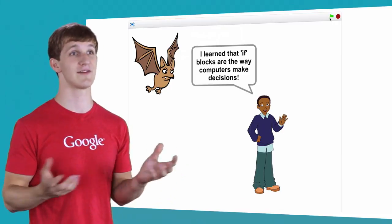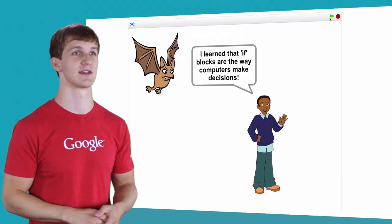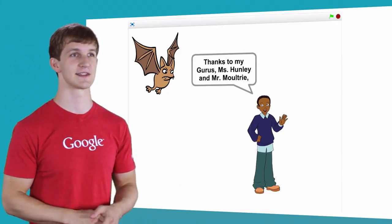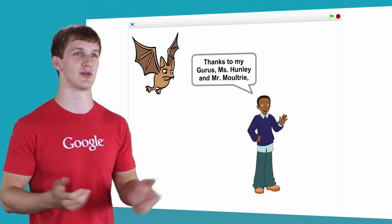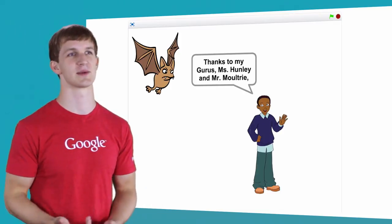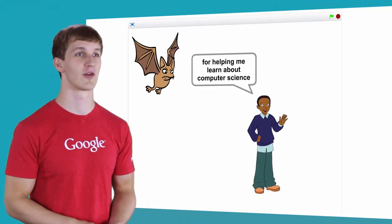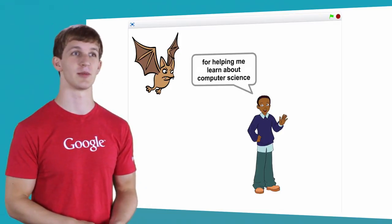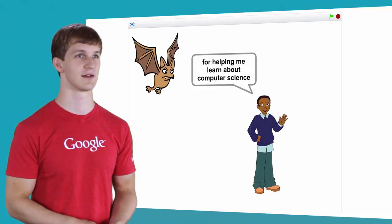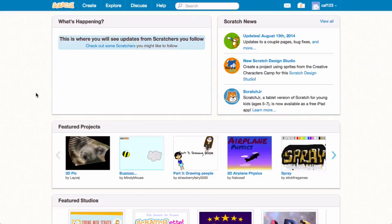The other sprite says, "I learned that if blocks are the way computers make decisions." Then it says, "Thanks to my gurus, Ms. Hunley and Mr. Moultrie, for helping me learn about computer science." You can make yours look however you like — this is just one example.